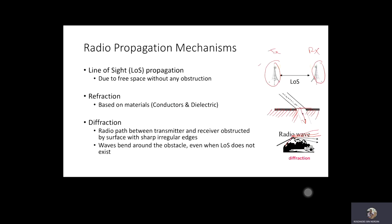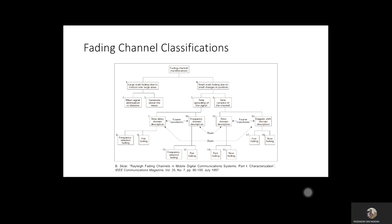In general, we have five different propagation mechanisms: line-of-sight, refraction, diffraction, reflection, and scattering. Now we're going to look at the classification established by Bernard Sklar. Sklar established two kinds of fading: large scale fading and small scale fading. Large scale fading is further classified into two types: attenuation across distance, which I call path loss, and variation about the mean, which is the shadowing effect.